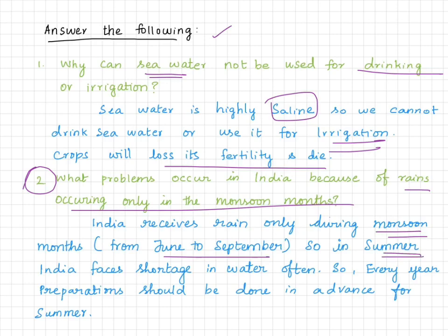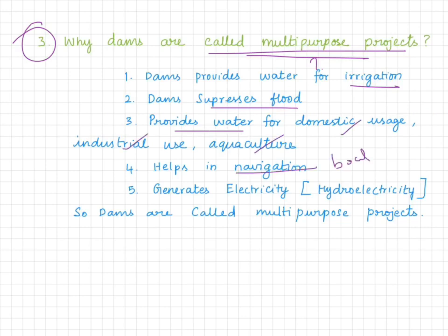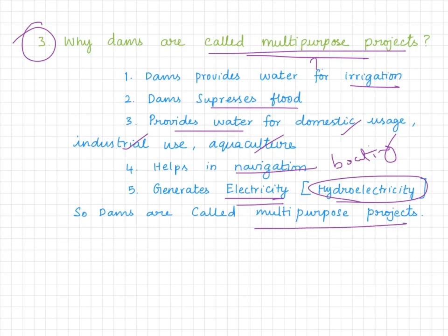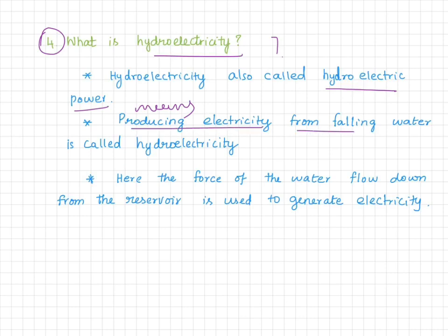What problems occur in India because of rains occurring only in the monsoon months? We face water shortage often. Why are dams called multi-purpose projects? Dams provide water for irrigation, control floods, provide water for domestic, industrial, and agricultural use, help in navigation, and generate electricity — called hydroelectricity. So dams are called multi-purpose projects.